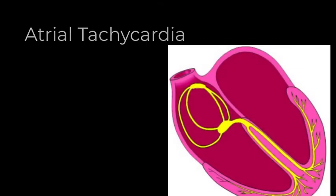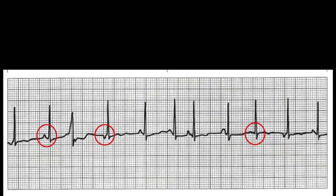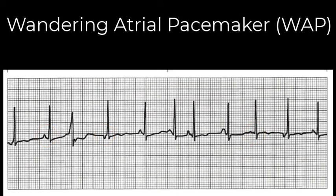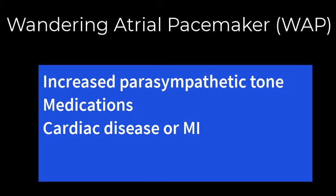Just like with PACs, sometimes there is more than one pacemaker site responsible for an atrial rhythm. We determine that by noticing at least three different P waves on our tracing — it is reasonable to assume that three distinctly different looking P waves are caused by at least three different sites. If we have at least three different appearing P waves, one of which might be the SA node, we call this a wandering atrial pacemaker. Those abnormal P waves may come in any shape or direction, the PR intervals are likely to vary and often be less than normal, and they usually produce normal appearing QRS complexes. Causes include increased parasympathetic stimulation, especially in younger patients, responses to medications like Digitalis, or a recent MI. This rhythm is usually asymptomatic, and any treatment provided is aimed at the underlying cause.